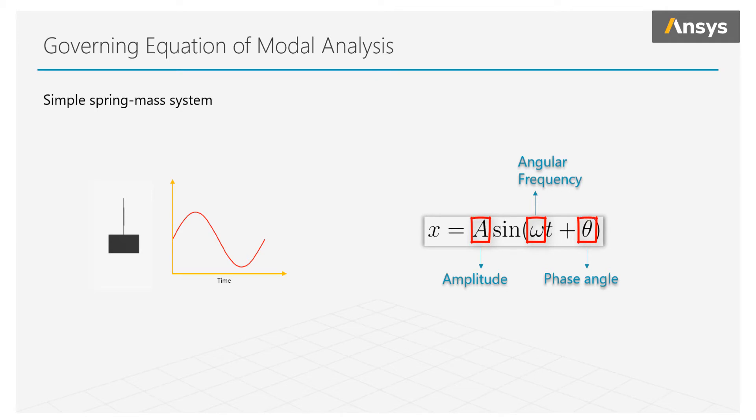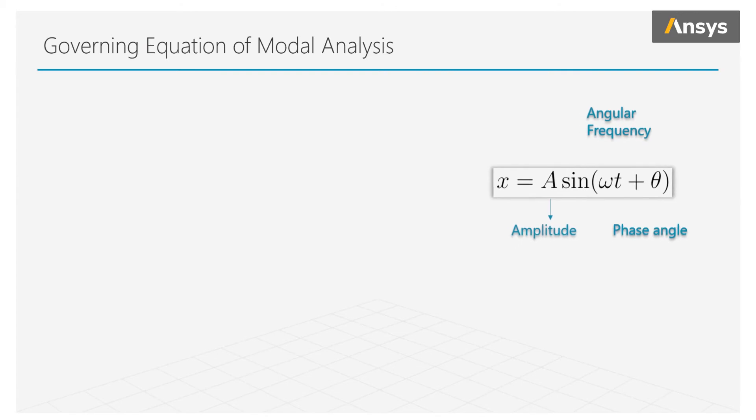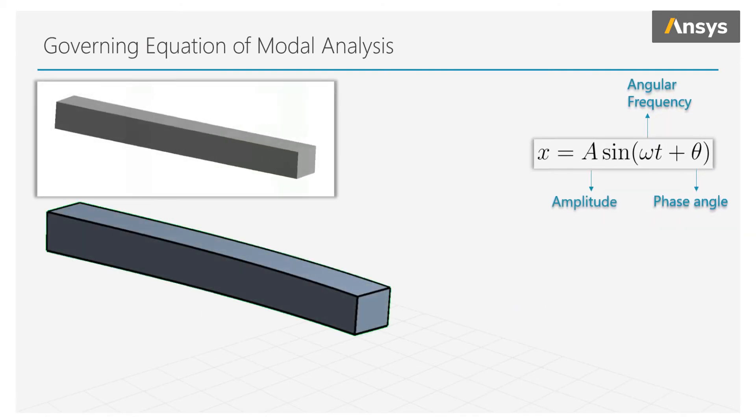So, let's imagine every material point of a structure is a spring mass system, and that each of these points is vibrating at the same frequency, but with different amplitudes or magnitude of the deformation and phase angle, which we can think of as the relative timing of the vibration.